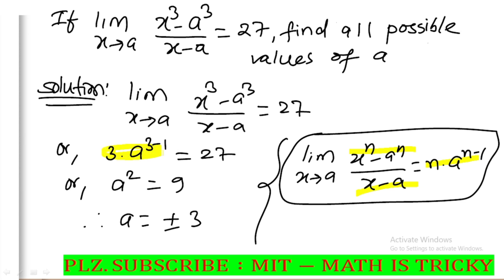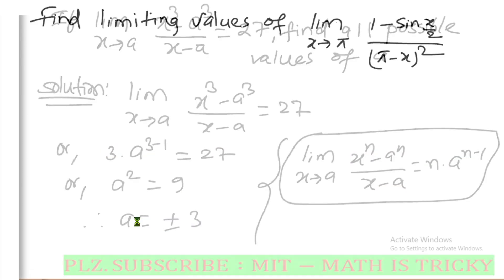So n equals 3, and at the result we get 1 minus 2, giving 9. So e is equal to 4 plus or minus 3. That's our answer. Moving on to the next question.